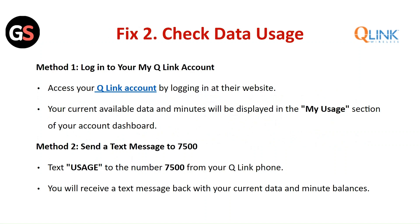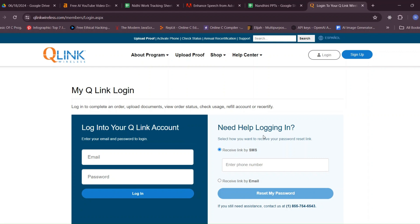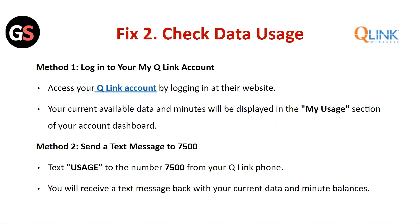Fix two: Check the data usage. Method one — log in to your My Qlink account. Access your Qlink account by logging in at their website. Your current available data and minutes will be displayed in the My Usage section of your account dashboard. Method two — send a text message to 7500. Text the word 'usage' to the number 7500 from your Qlink phone.